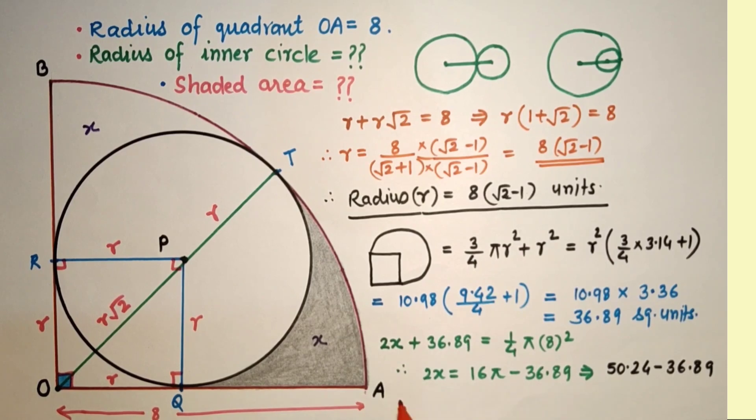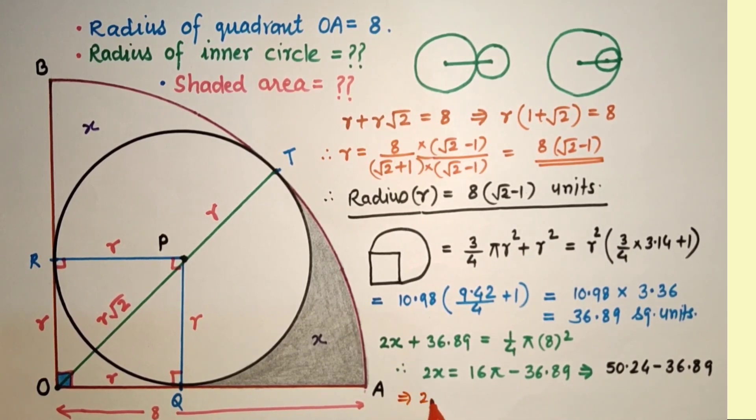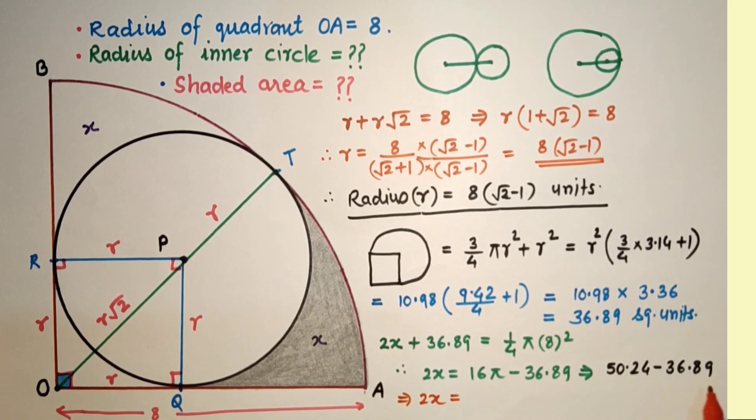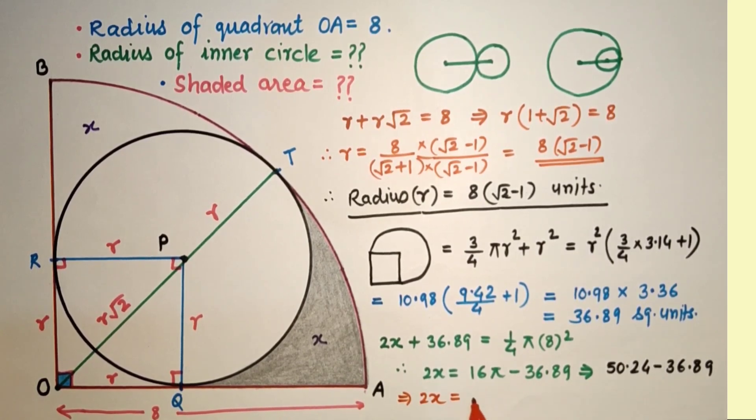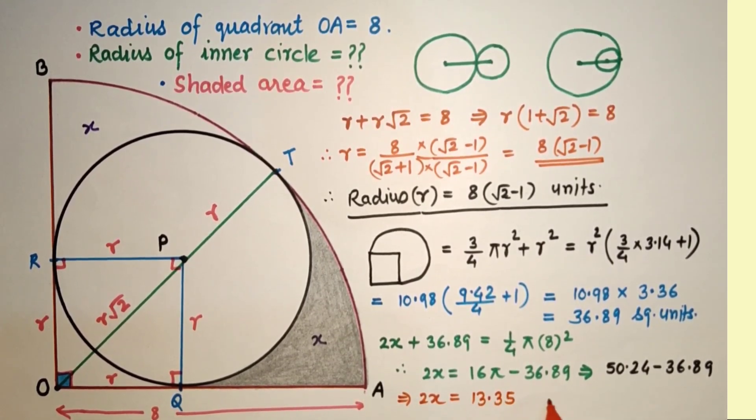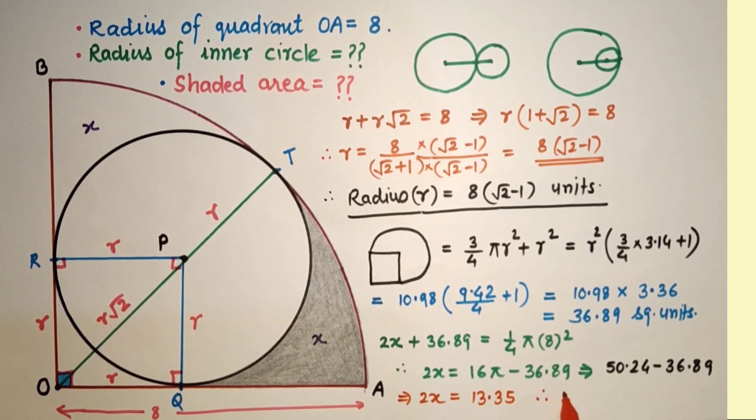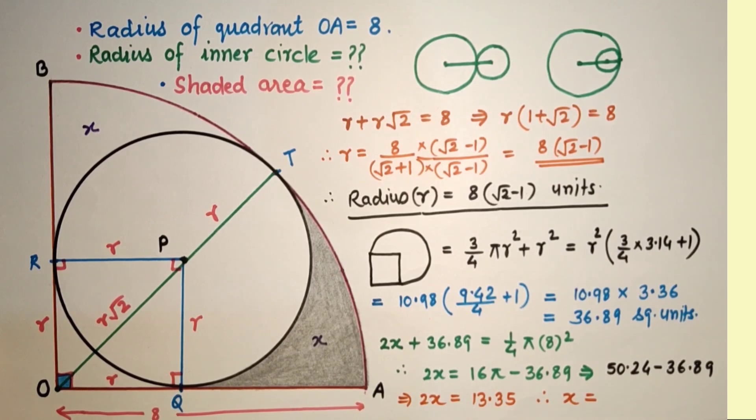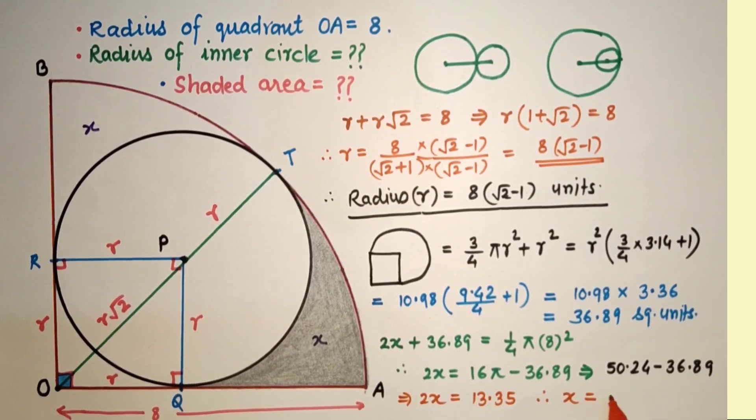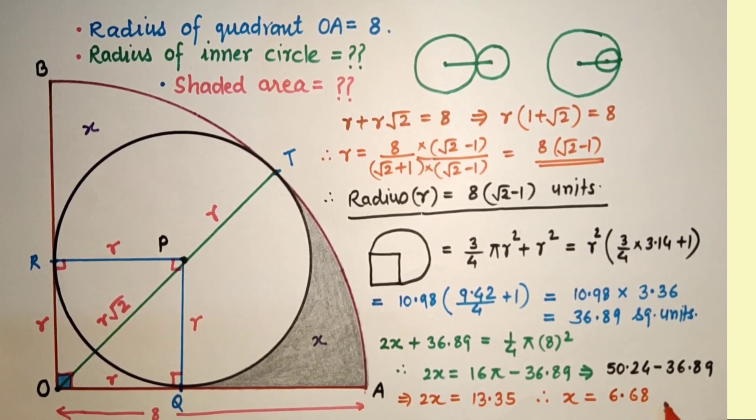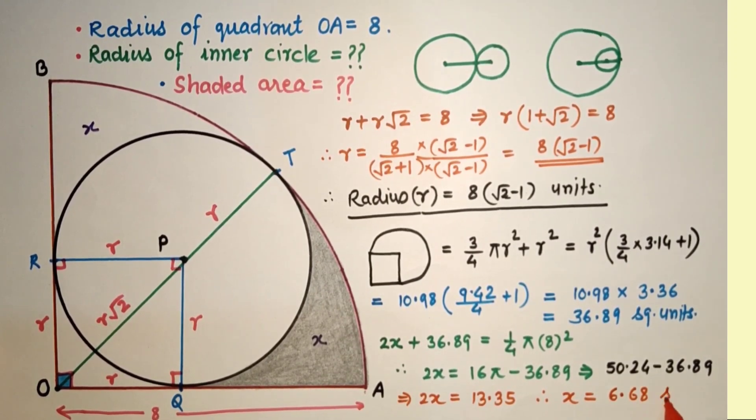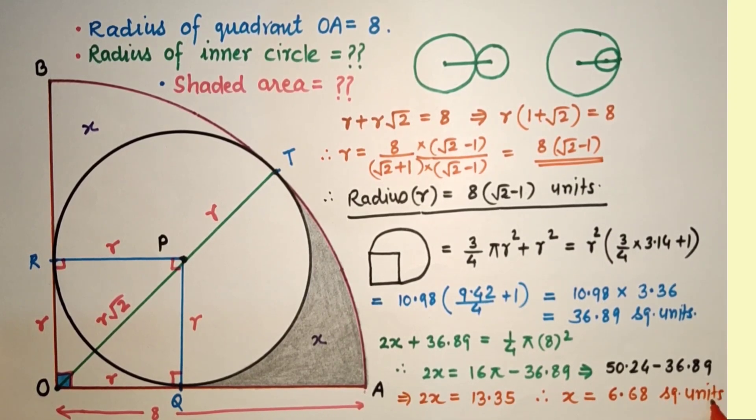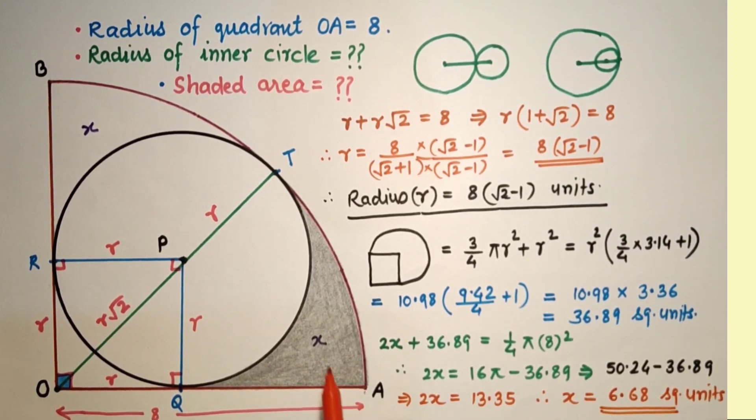That equals 50.24 minus 36.89, which equals 13.35. Therefore x equals approximately 13.35 divided by 2, approximately 6.68 square units.